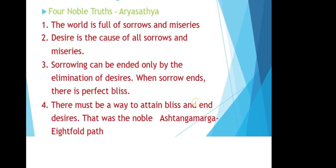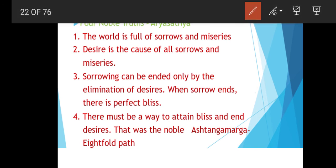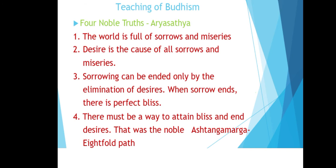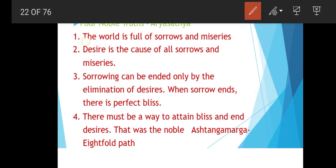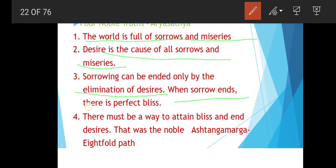The Four Noble Truths, also known as Arya Satya, are: first, the world is full of sorrow and misery; second, desire is the cause of all sorrows and miseries; third, sorrow can be ended only by elimination of desire; fourth, there must be a way to attain bliss and end desire — that way is the Ashtanga Marga or Eightfold Path.